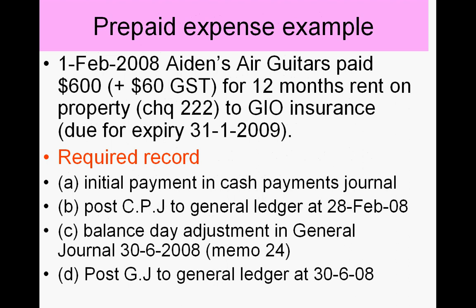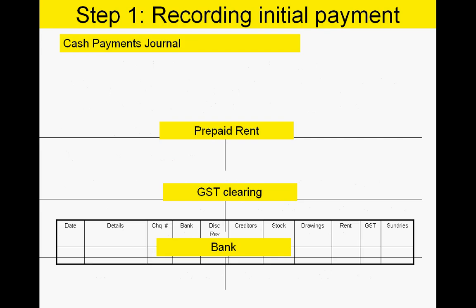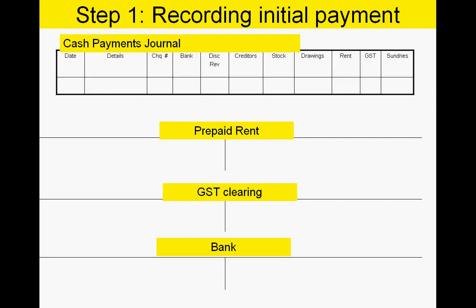The first example: a business has prepaid their rent 12 months in advance on the 1st of February, due to expire at the end of January the following year, with reports done annually at the 30th of June. We'll deal with the initial payment, post it to the general ledger, then do the balance day adjustment five months later.